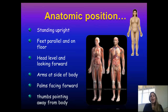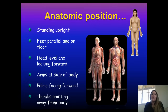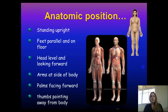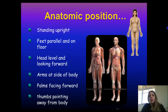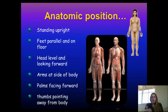Anatomical position is how anatomists and physiologists refer to a particular body or specimen they're working on. Every time you're doing a dissection and want to refer to a part of the body, you assume that specimen is in anatomical position. In anatomical position, you are standing up, feet facing forward and parallel, arms down at the sides, palms facing forward with thumbs out to the side, and head level and looking forward.